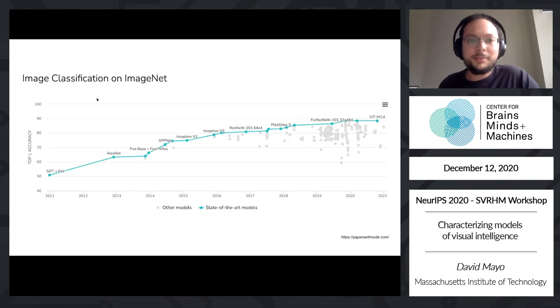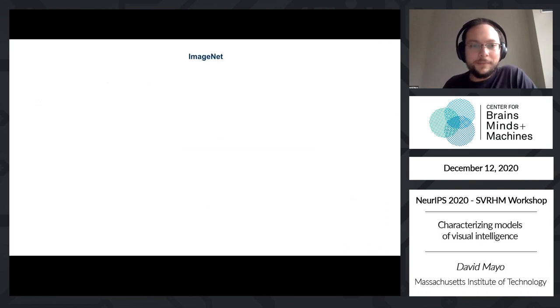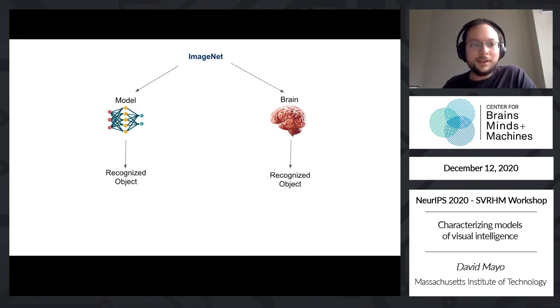If you just look at raw performance on many benchmarks today, you'd think that computer vision is well on its way to being solved. Performance is really not that far away from human level. In some very recent cases, it may even have surpassed people and many specific tasks. But let's take a look at this paradigm. We take ImageNet images, show them to our models and to people, and we're comparing just the accuracy.